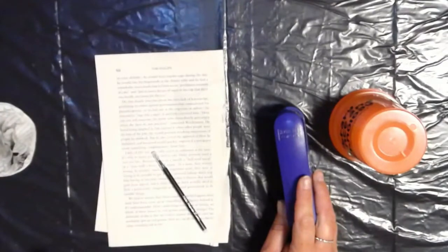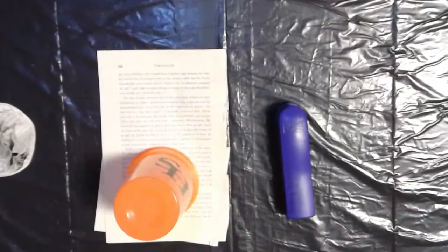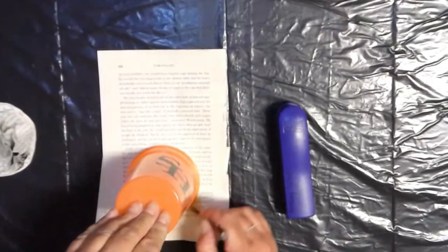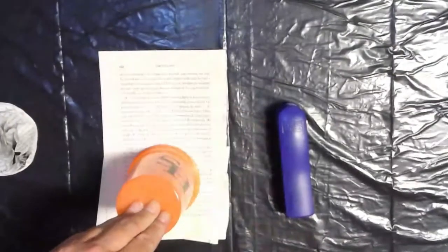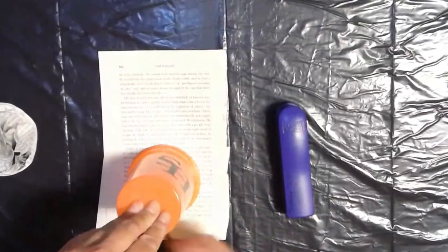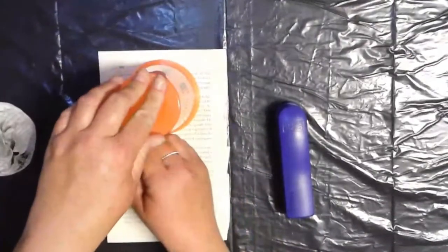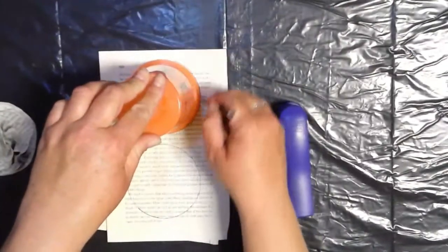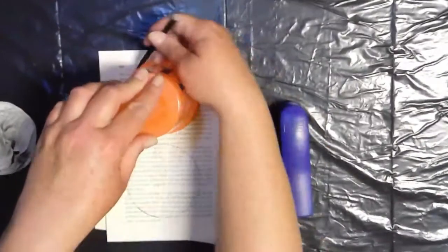To start with, I'm just going to take my cup and I'm going to trace the outline of the circle onto the book page. Because this one's a little bit longer, I can actually do two different circles, so I can do a couple of flowers here.